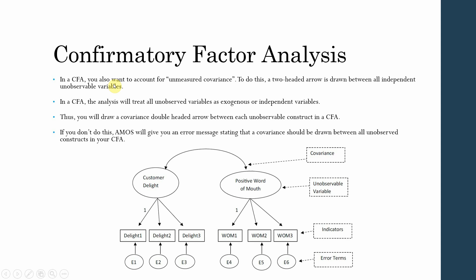In confirmatory factor analysis, you also want to account for unmeasured covariance. To do this, you need a two-headed arrow drawn between the independent and dependent variables or all the unobserved variables.